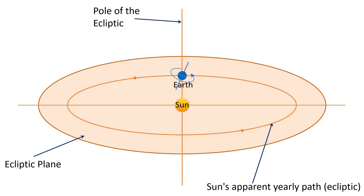The imaginary plane containing the earth's orbit around the sun is called the ecliptic plane. This is shown with a light orange circle on your screen. The sun's apparent path to the sky lies in this plane and is called ecliptic as pointed out in the diagram.